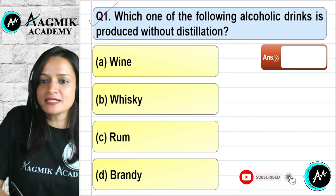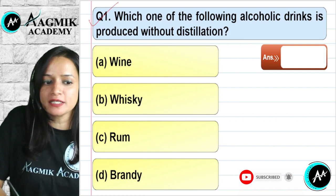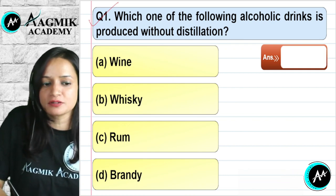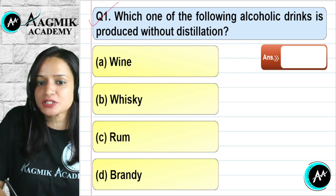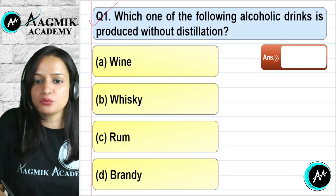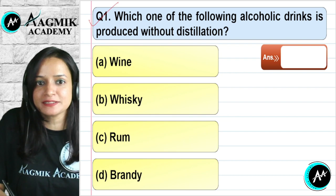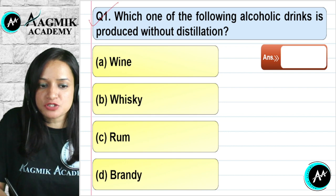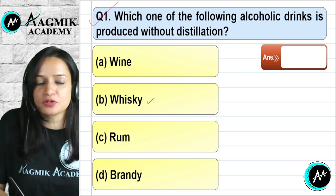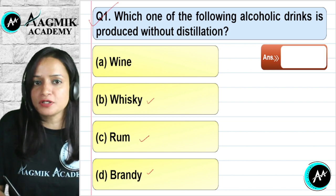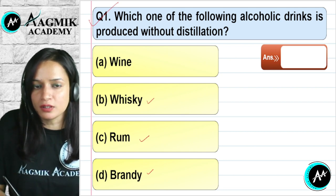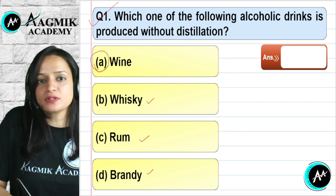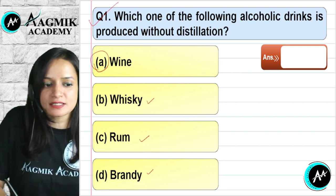Question number 1: Which one of the following alcoholic drinks is produced without distillation? With distillation, the alcohol content increases. Whiskey, rum, and brandy are all produced by distillation, so they have a higher alcohol content. Wine and beer are produced without distillation. So the correct answer is option A.